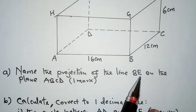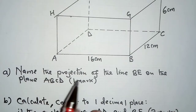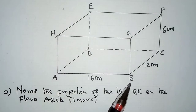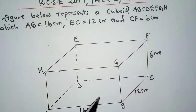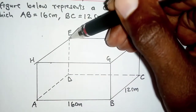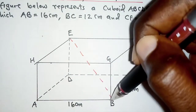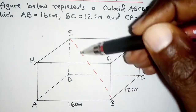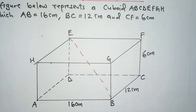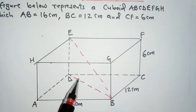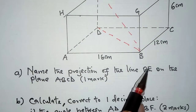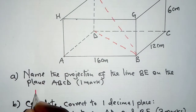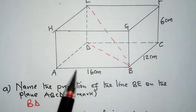For Part A: name the projection of line BE on plane ABCD. The projection of a line is just the shadow of that line on the plane in question. So line BE will have its shadow on plane ABCD right there. The projection of line BE is just BD — that is the projection on plane ABCD.